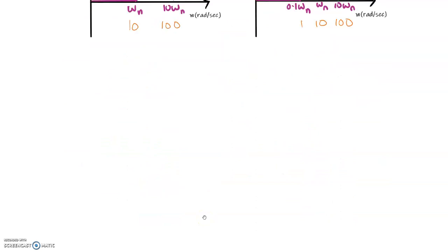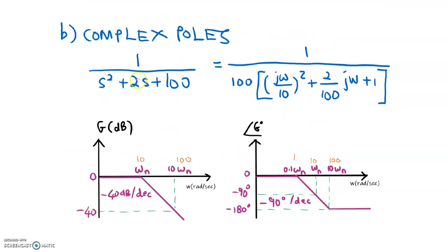The next one is complex poles. If we have this function at the denominator, just leave it as is — do not factorize. Replace S with jω and rearrange until we have plus 1 at the end. Divide by 100, and be careful — divide the S term by 10. So 10 squared gives 100. Multiply this function by 100 so that we get the same form as before.